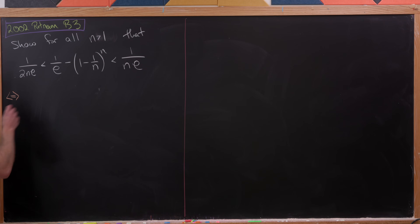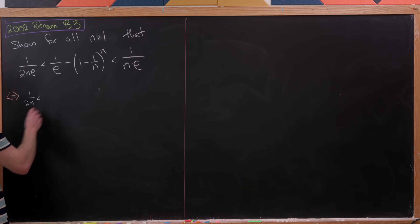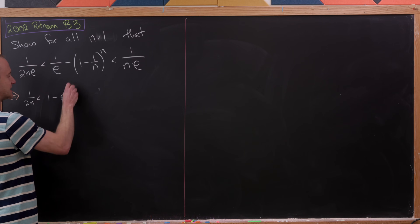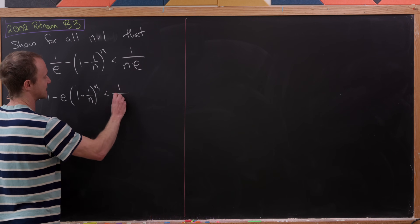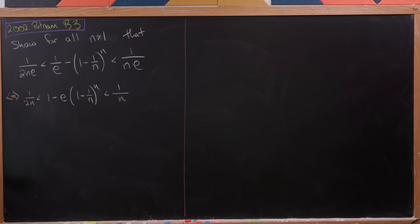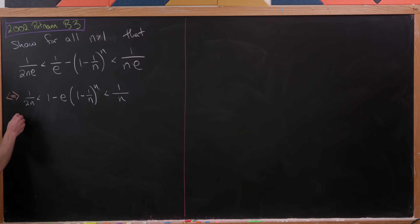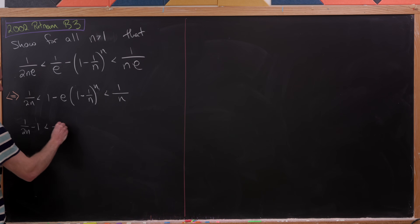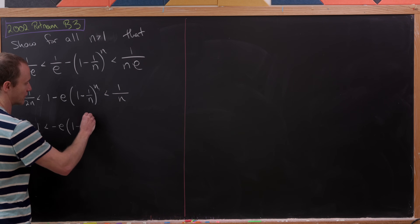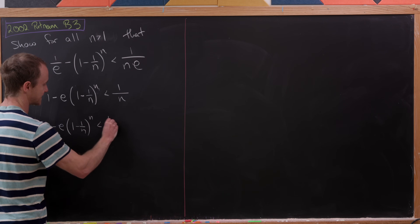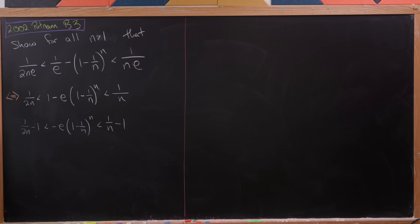Our first manipulation will be to multiply everything by e. That leaves us with 1/2n less than 1 minus e·(1 minus 1/n)^n, which in turn is less than 1/n. Next, we subtract 1 from all parts, giving us 1/(2n) minus 1 less than negative e·(1 minus 1/n)^n, which is less than 1/n minus 1.